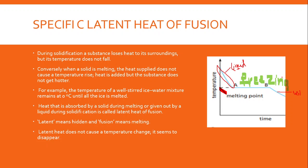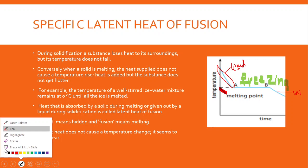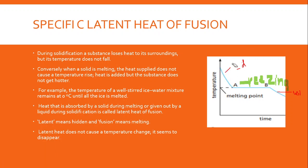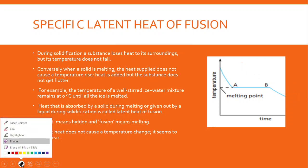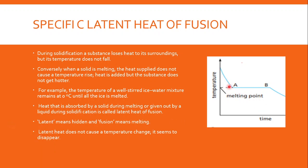There are some really notable characteristics of this graph. When the object is going through the state change itself, we can see that the line is not at an angle — it is completely horizontal. That tells us that when a substance is going through a state change, whether freezing, melting, or any other, the temperature does not change. That is what gives us this horizontal line.